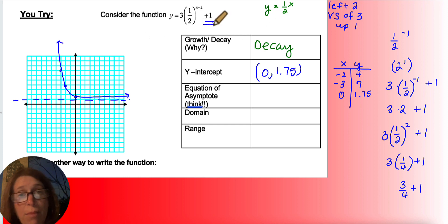Equation of my asymptote. Remember that k was moved up 1, so y equals 0 moves up to y equals 1. My domain has no restrictions. And my range relates to my equation of my asymptote. So 0 to infinity.